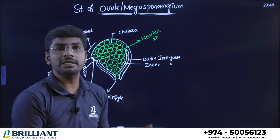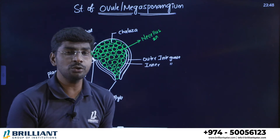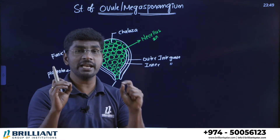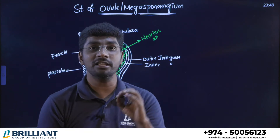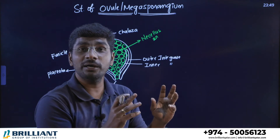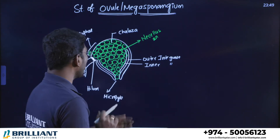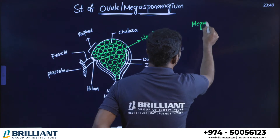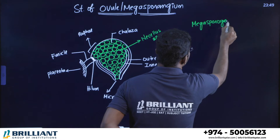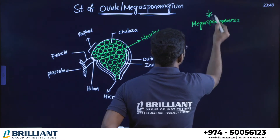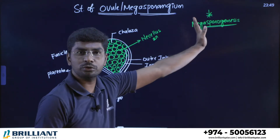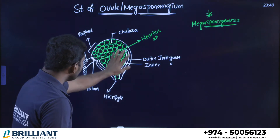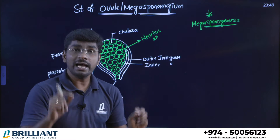That completes the structure of the ovule, which is the megasporangium. The diploid tissue inside the ovule is the nucellus. Now we are going to start a very important concept: the formation of megaspores inside the megasporangium. This process is known as megasporogenesis — at least one question from this topic is certain, so focus carefully.